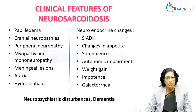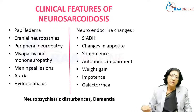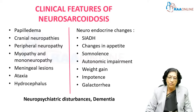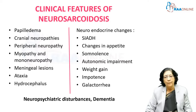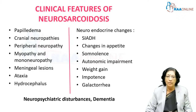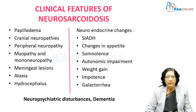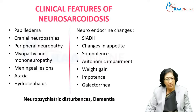Neuroendocrine changes are also very important. Sarcoidosis can present with syndrome of inappropriate antidiuretic hormone secretion (SIADH), and can produce changes in appetite, changes in sleep, autonomic impairment, weight gain, impotence, and galactorrhea.